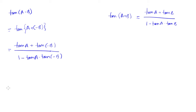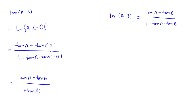So, let's take this. The formula tan of a minus b is equal to tan a minus tan b divided by 1 plus tan a into tan b.